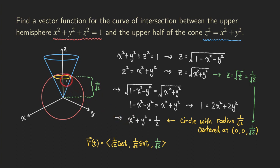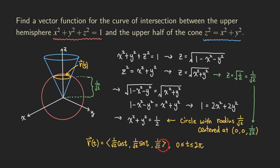So that's our vector function for this curve of intersection. For the parameter T, we can go from 0 to 2π, because that's a full circle — all we need to do is trace out the whole circle. This problem is actually not too bad — it's quite simple. The strategy is to make a substitution to find an equation representing the curve of intersection of the two surfaces, and then based on that equation, come up with the vector function.